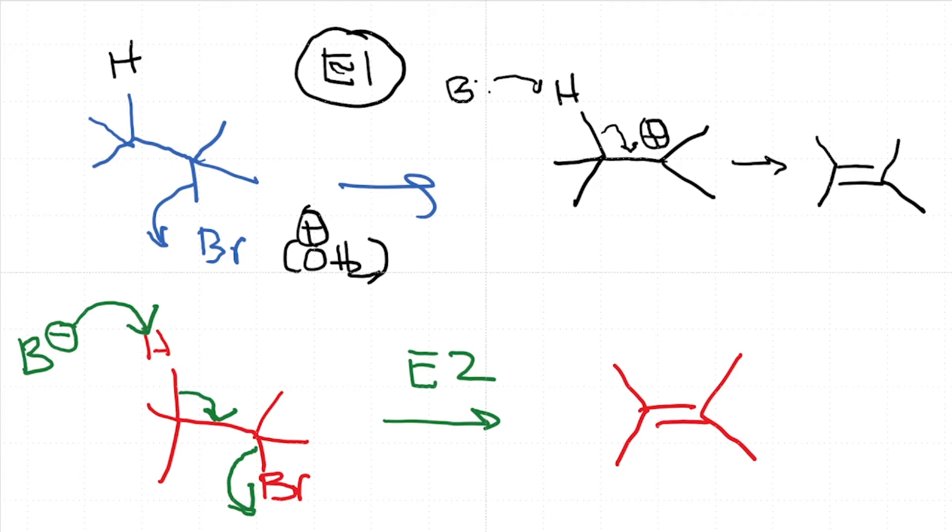There are probably other important differences such as the selectivity. For example, in E1 you invariably end up with a mixture of eliminated and substituted products. In E2, if you use a strong base and if you have a fairly good leaving group and it is sterically hindered, you are going to end up with the eliminated product. Now what we will look at now is another important mechanism.